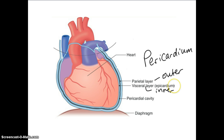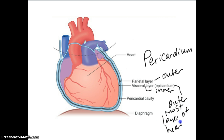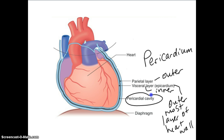The epicardium is the outermost layer of the heart wall. Between the outer layer and inner layer of the pericardium there is what's called the pericardial cavity, which is just a space where pericardial fluid is found.